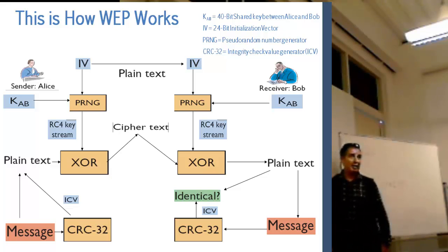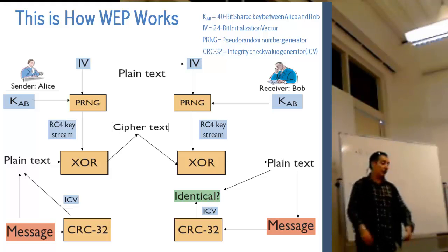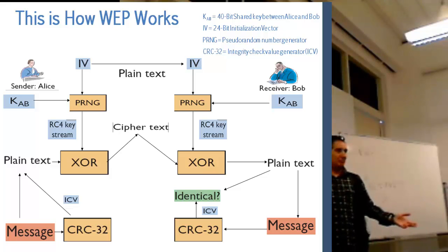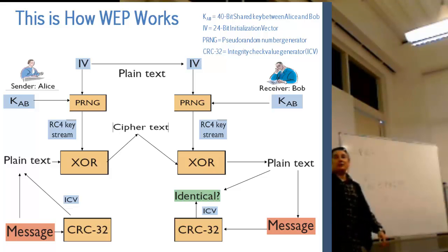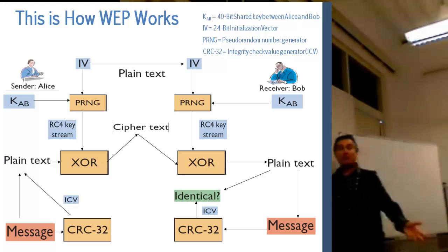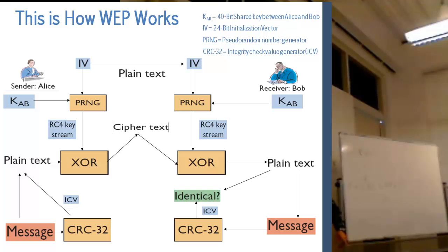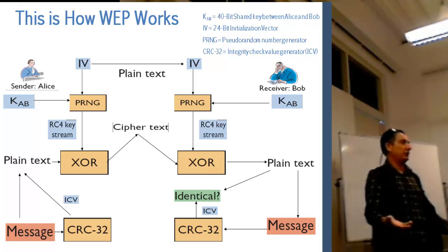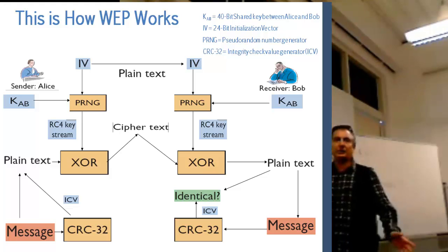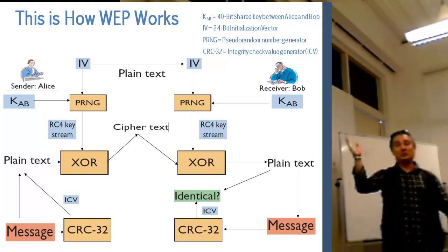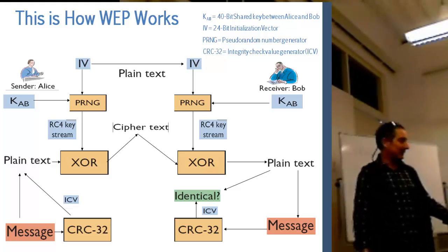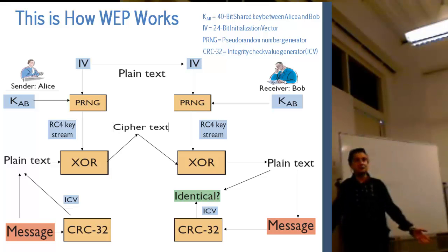Similarly, a commander who sent an order saying 'go and take this hill' - if it caused huge problems - cannot later deny sending it. We need a mechanism so that Alice cannot deny sending that command or ciphertext. That's non-repudiation. For wireless communications or encrypted email to a friend, non-repudiation may not be critical since you're not transmitting a very big secret.